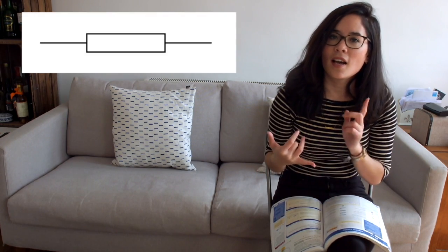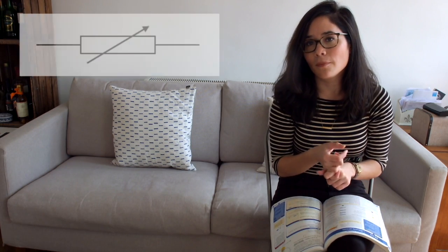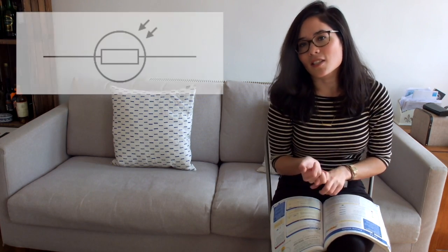Next up I want a resistor, and let's go along all the resistors in the resistor family, so I want a variable resistor, a thermistor, and a light dependent resistor.